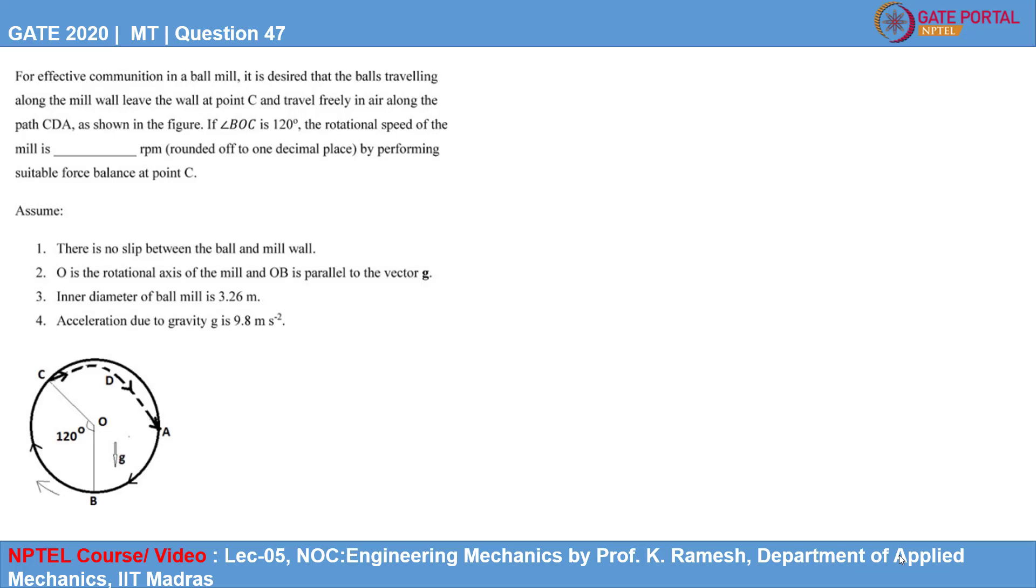To find the RPM of the ball mill, we need to do the force balance at point C. We will draw a free body diagram of all the forces, representing all the forces at point C.